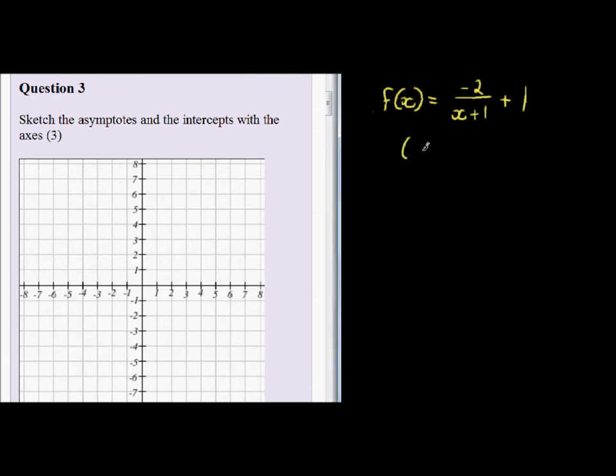We found that when x was 0, y was equal to negative 1. That was the y-intercept and the x-intercept was when y was 0, we found x to be positive 1.